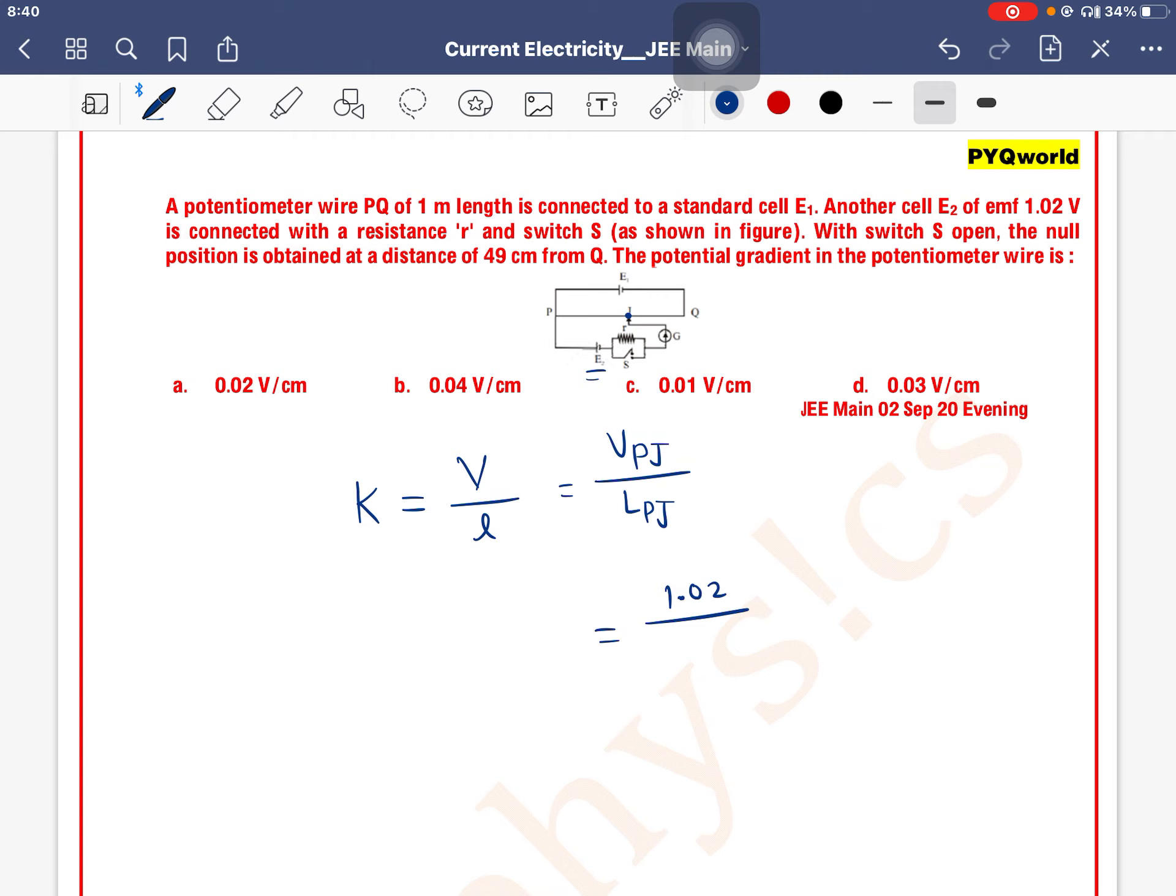What is the length of PJ? Look at the question - 49 cm from Q. Total length is 1 meter, which is 100 cm, so we can write 100 minus 49 cm, right? So here we have 1.02 divided by 51 cm. Now 1.02 by 51 cm equals 0.02 V/cm. Option A is the correct one.